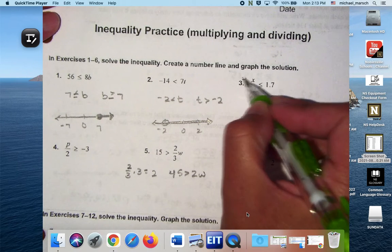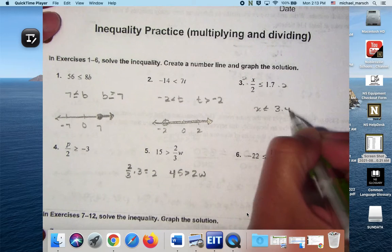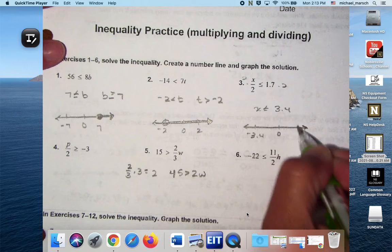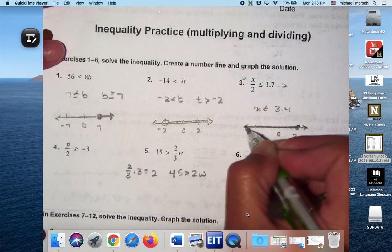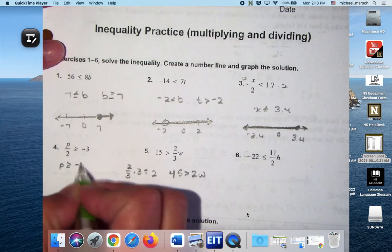So when I multiply both sides by 2 here, I get X is less than or equal to 3.4. Closed circle going to the left. P is greater than or equal to negative 6.